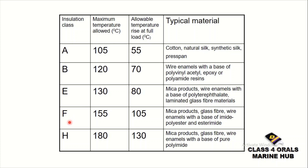Next is Class F insulation. The maximum allowed temperature is now increased to 155 degrees centigrade, and the allowable temperature rise at full load is 105 degrees. The typical materials include mica products, glass fiber, and wire enamel with a base of imidant polyester and acetyl amide.